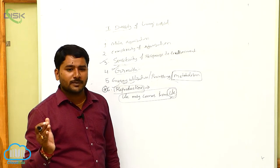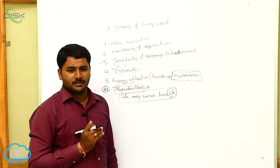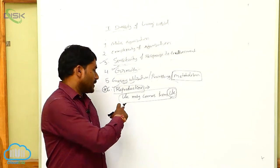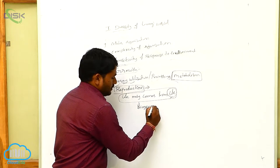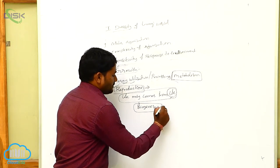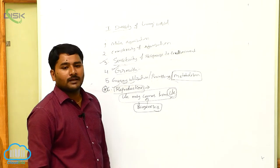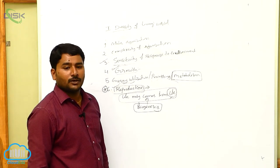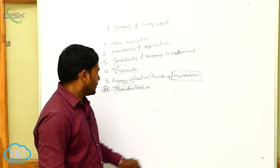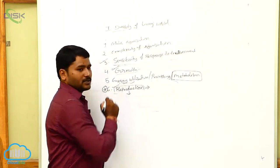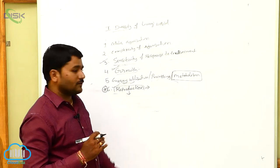Living organisms are produced by other living organisms belonging to the same species — that is the biogenesis theory. As per biogenesis theory, life only comes from life but not from non-living things. So how does life come only from life? By the process of reproduction.